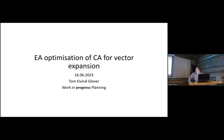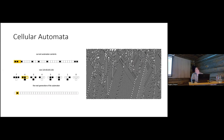I call this talk 'Work in Planning' because 'progress' felt like a bit much for me. It's about evolutionary algorithm optimization of cellular automata for vector expansion. I'm always a little uncertain whether people are familiar with my topics, so if anyone wants me to explain cellular automata, raise your hand.